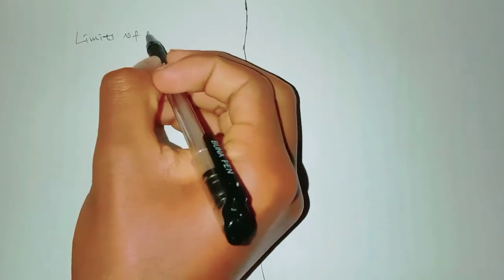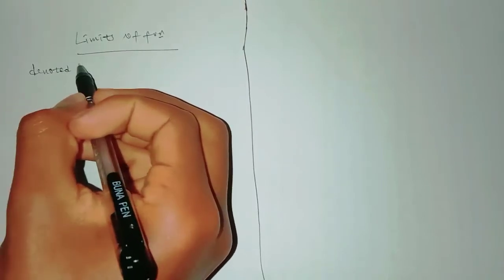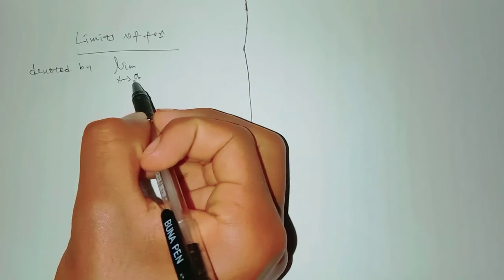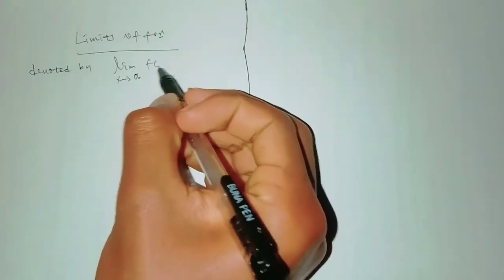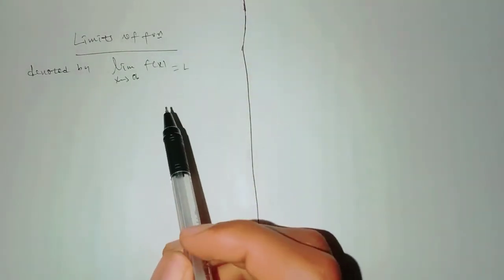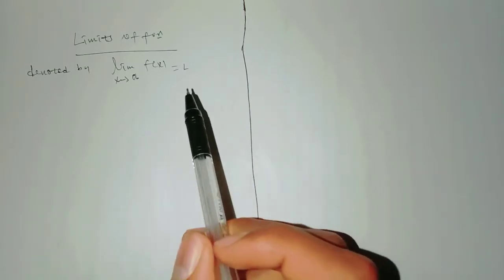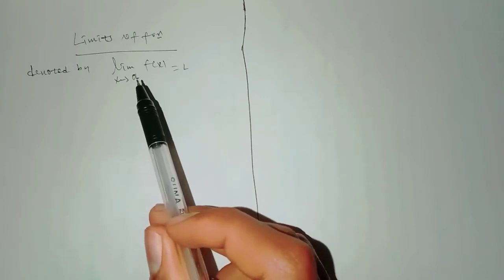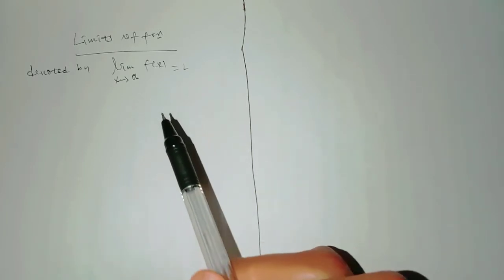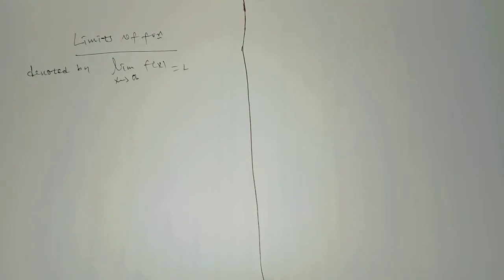This video focuses on limits of a function. The limit is denoted as the limit of f(x) as x approaches a value 'a', where 'a' is a fixed real number. As x approaches 'a', f(x) approaches a value L, which is the limit.